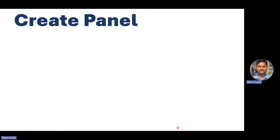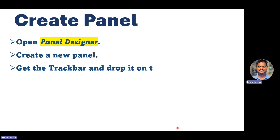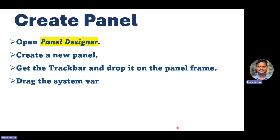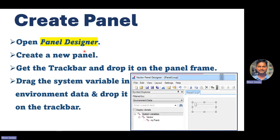To create a panel, open the panel designer in the Vector tool, create a new panel, get a control such as a track bar and drop it on the panel frame. Then drag the system variables from the environment data and drop it on the track bar. If you don't want to work on system variables, you can directly work on database signals - that is also possible.